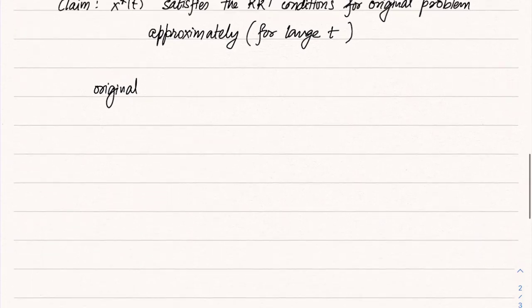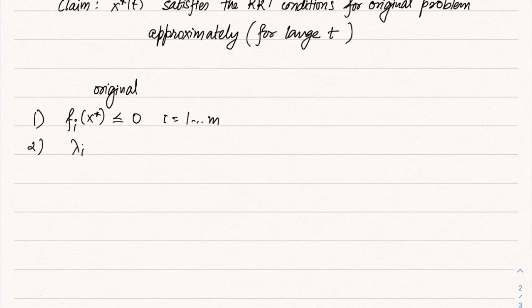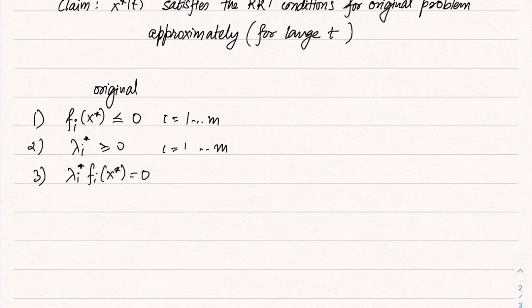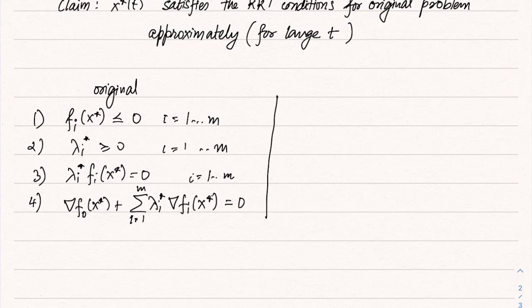The KKT conditions for the original problem are: primal feasibility — fᵢ(x*) ≤ 0 for i = 1 to m; dual feasibility — λᵢ* ≥ 0 for i = 1 to m; complementary slackness — λᵢ*·fᵢ(x*) = 0 for i = 1 to m; and the first-order condition — ∇f₀(x*) plus the summation over i from 1 to m of λᵢ*·∇fᵢ(x*) equals 0.